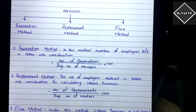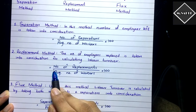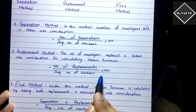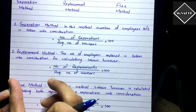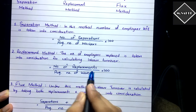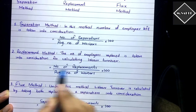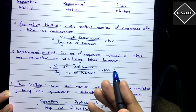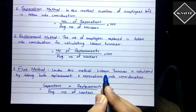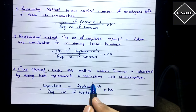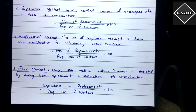In the replacement method, the number of employees replaced is taken into consideration. The formula is: number of replacements divided by average number of workers, multiplied by 100. The average number of workers is calculated the same way — opening plus closing divided by two. In the flux method, both replacements and separations are added together and divided by the average number of workers, multiplied by 100.